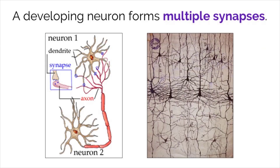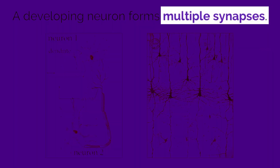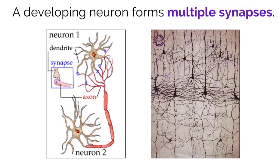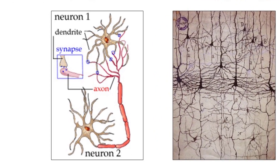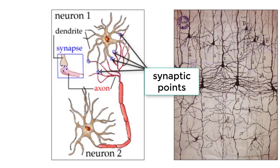When neurons are developing, they form multiple synapses with their target cells. As you can see in this picture, these two neurons have multiple synaptic points to increase the signal strength that is passed between them.